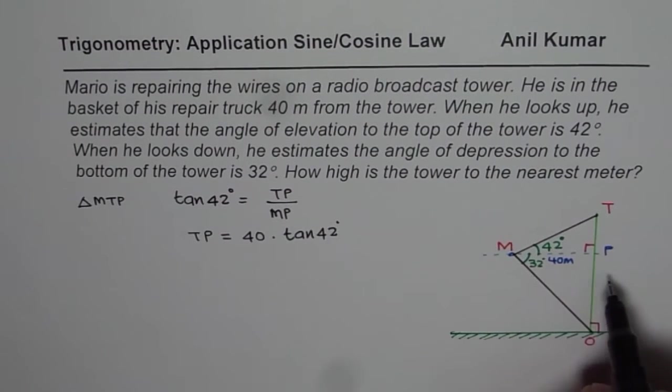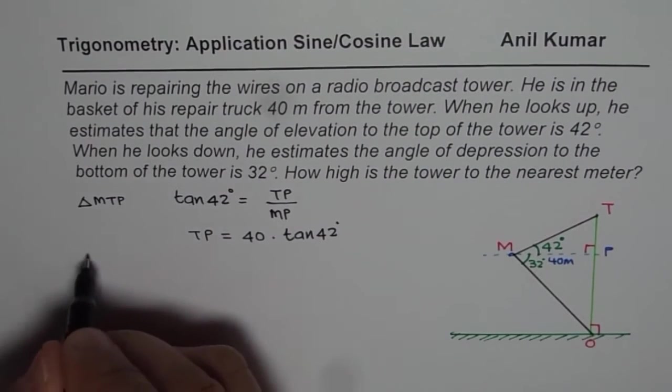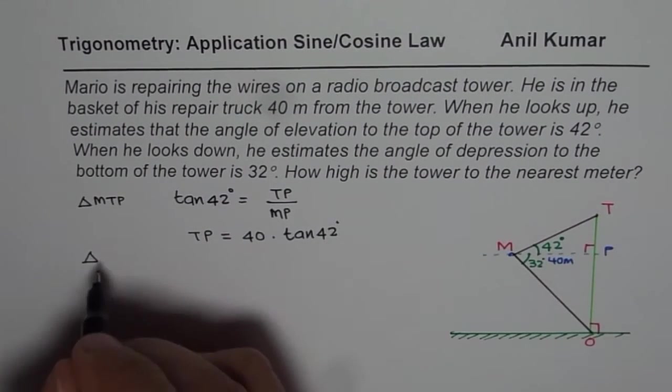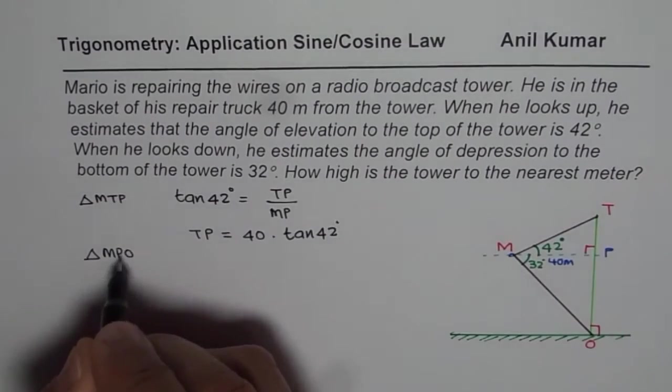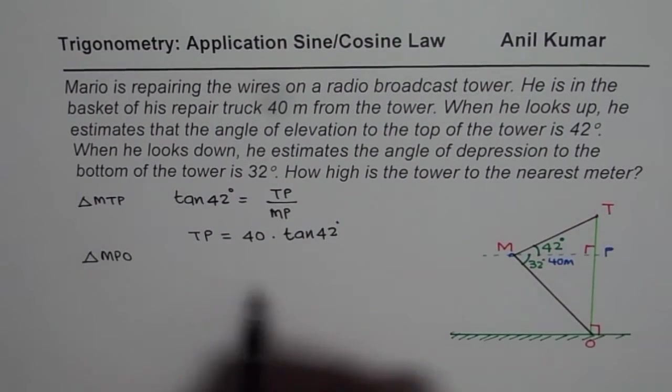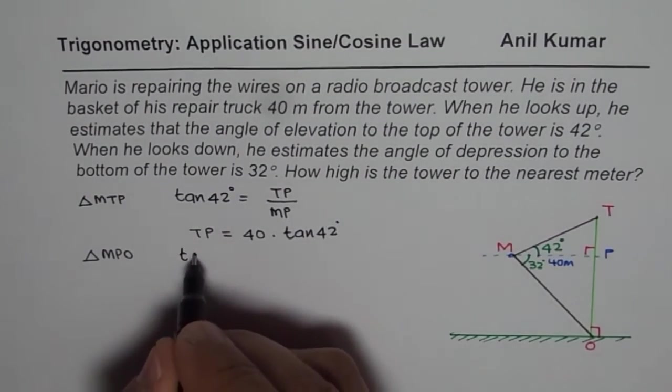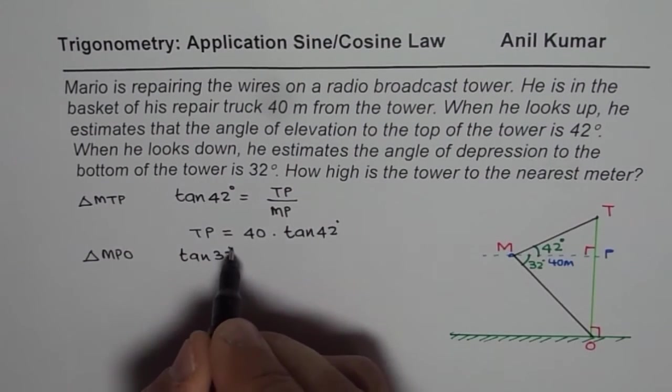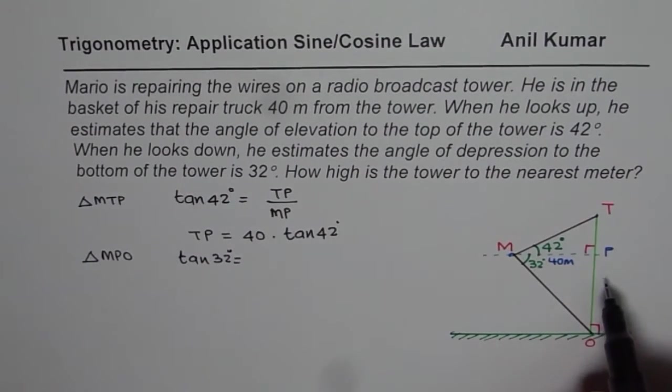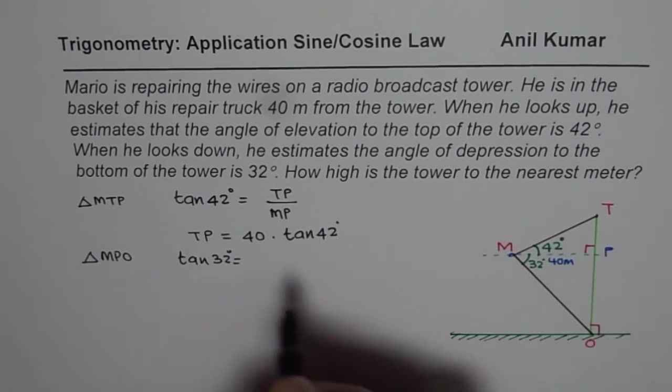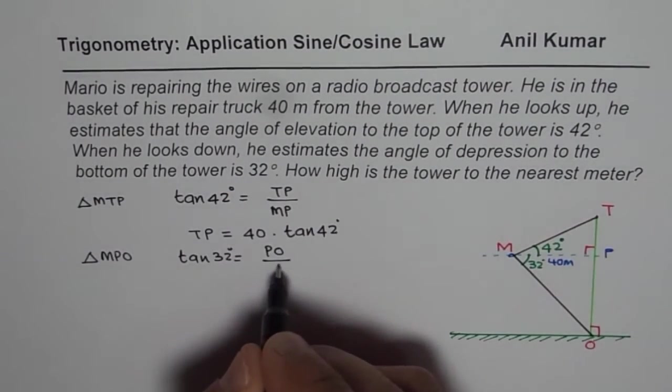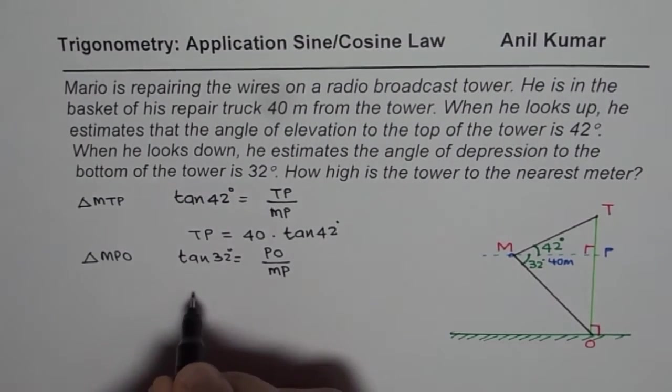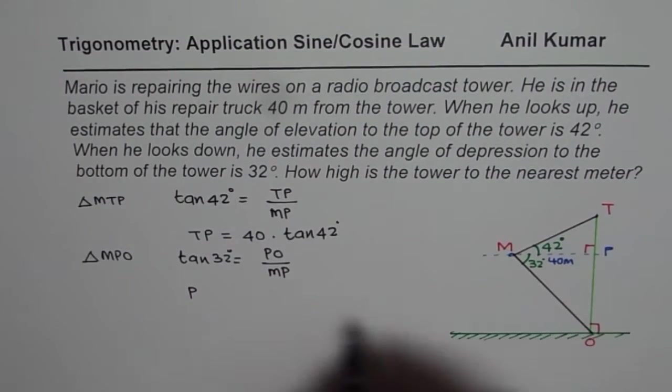Now, let us see the other triangle. Let us analyze the triangle MPO. In triangle MPO, which is also a right triangle, we say that tan of 32 degrees equals PO divided by MP. From here, we can find what PO is.